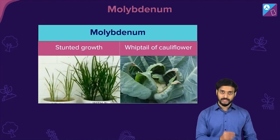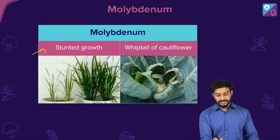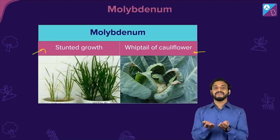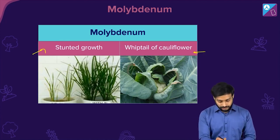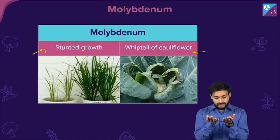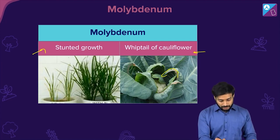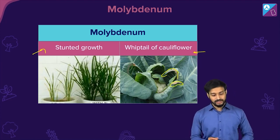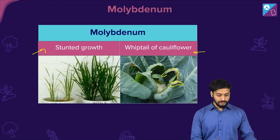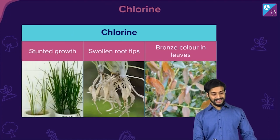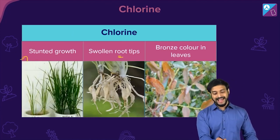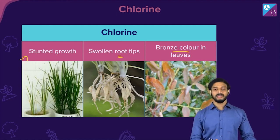Molybdenum deficiency causes stunted growth and whiptail of cauliflower — where the surface area of leaves reduces, the edges curl, and browning of the leaf portions is observed. Chlorine deficiency causes stunted growth, swollen root tips, and bronze coloring of the leaves.